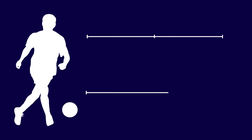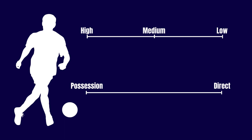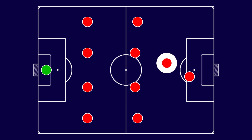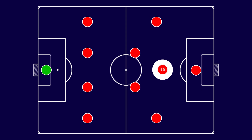The 4-4-2 formation accommodates various player characteristics and collective playing styles, such as high-pressing, medium-block, low-block, possession-based play, direct play, and more. For example, one of the strikers over time started playing as a floating second striker and, in some variations, became the number 10 in the 4-2-3-1 formation.